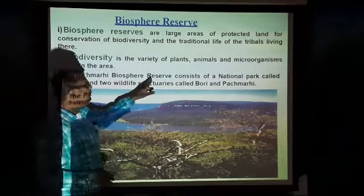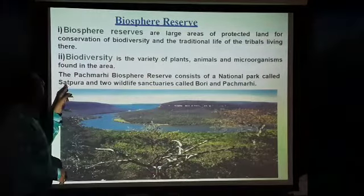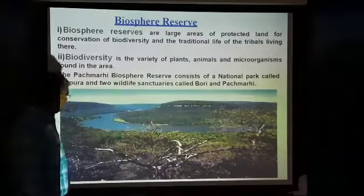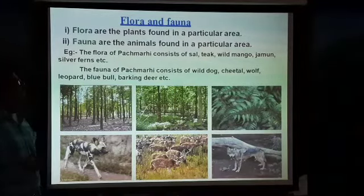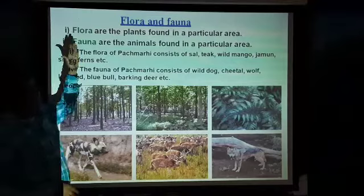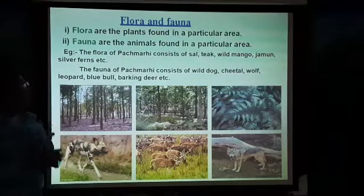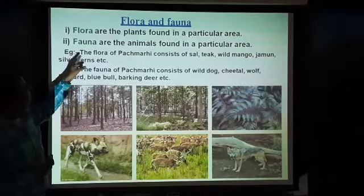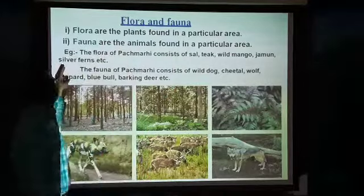Pachmarhi biosphere reserve consists of a national park called Satpura and two wildlife sanctuaries called Bori and Pachmarhi. This is an area where we can see all the different kinds of animals, plants, and microorganisms. Next comes flora and fauna. Flora means the plants found in a particular area. Fauna means the animals found in a particular area. For example, the flora of Pachmarhi consists of sal, teak, wild mango, jamun, and silver fern.